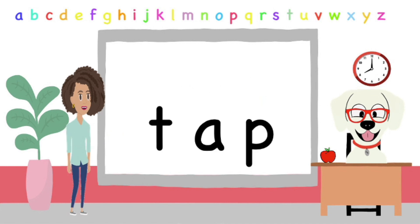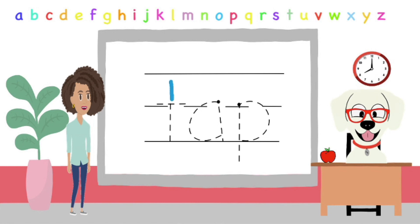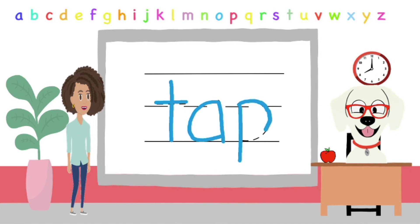Next we have T, A, P. What does T, A, P spell? Correct! It spells TAP. TAP. TAP. Let's write the word TAP. T, A, P, TAP. TAP.